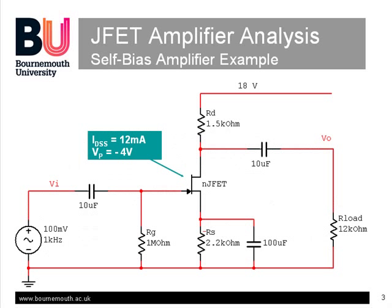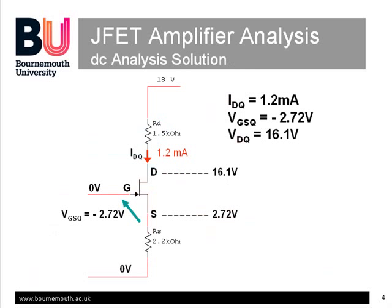This slide shows the results of the DC analysis we did in part 1. The bias on the gate is minus 2.72 volts, which produces a DC drain current of 1.2 mA. The potential gradient formed by the drain current gives a drain voltage of 16 volts, and the source voltage of 2.72 volts, with 0 volts on the gate.